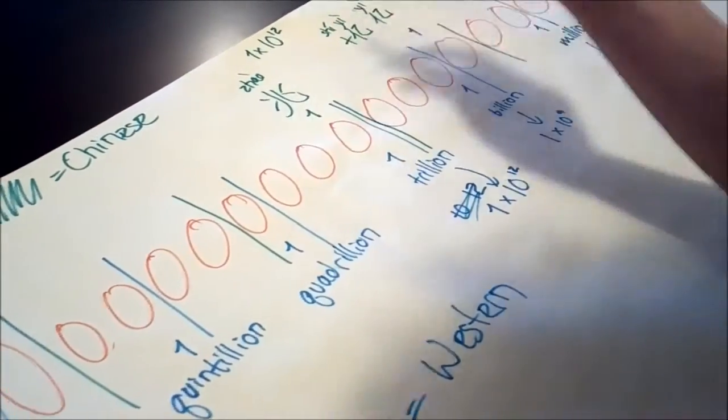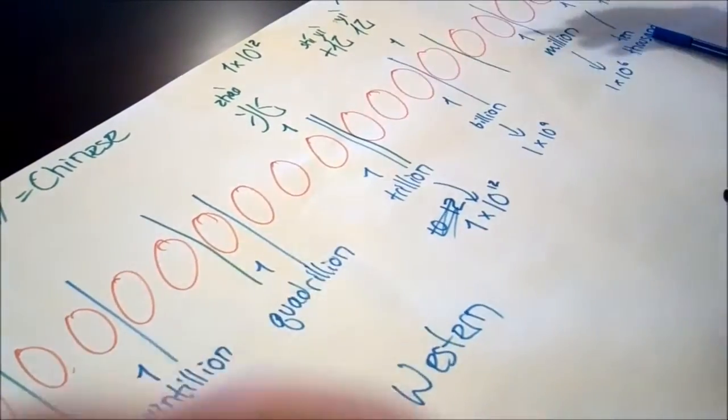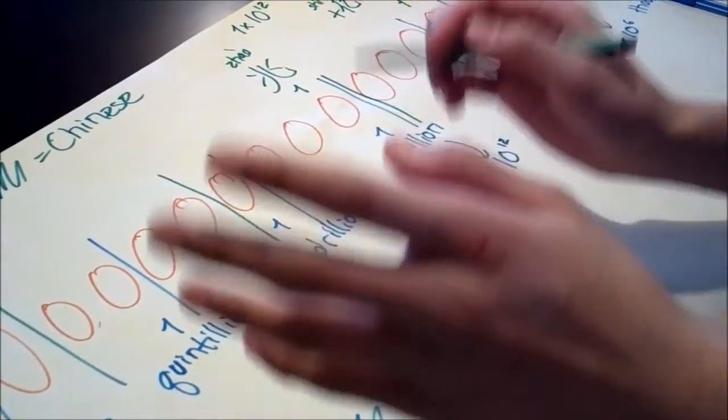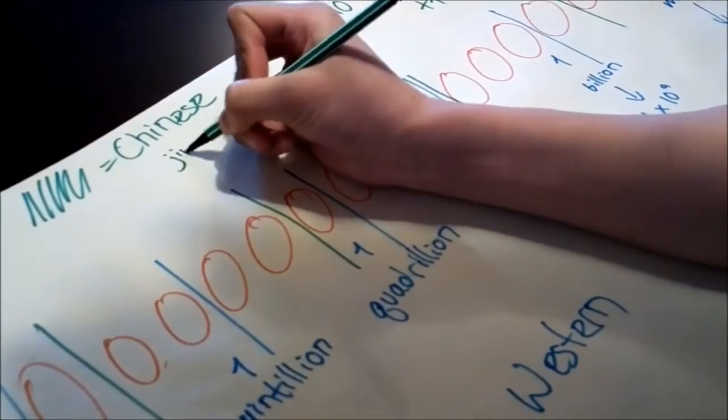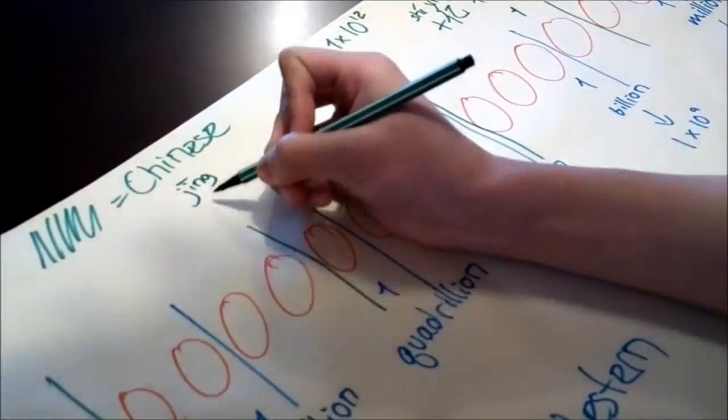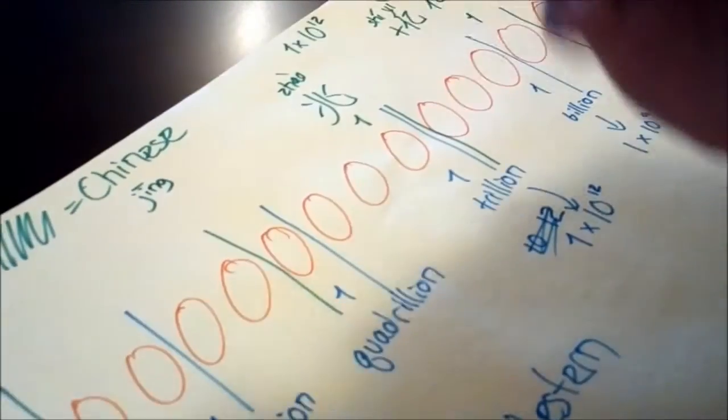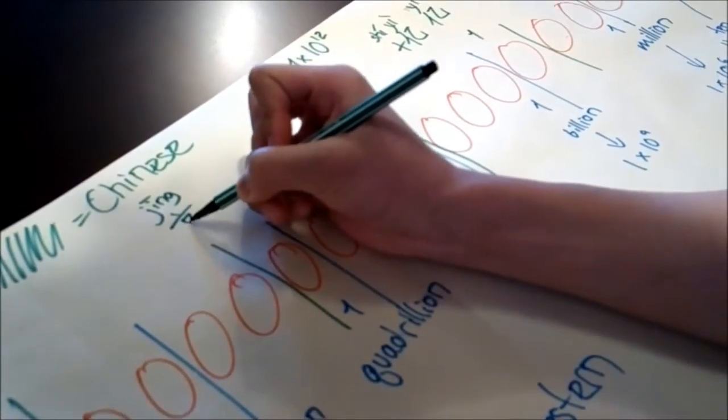So after zhao, you might be thinking, well, what's after zhao? Well, there's actually a certain point where it stops, but not after zhao. But anyway, after zhao comes this jing, which is jing. It's the same Beijing. You know the Beijing? That's the same jing. It looks like this. Jing.